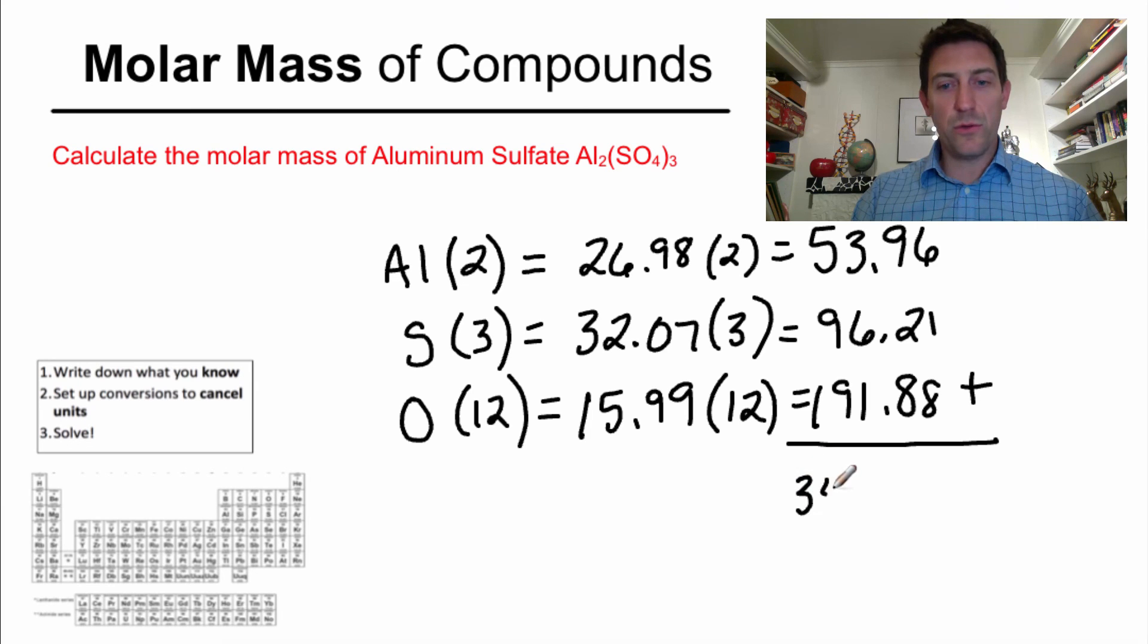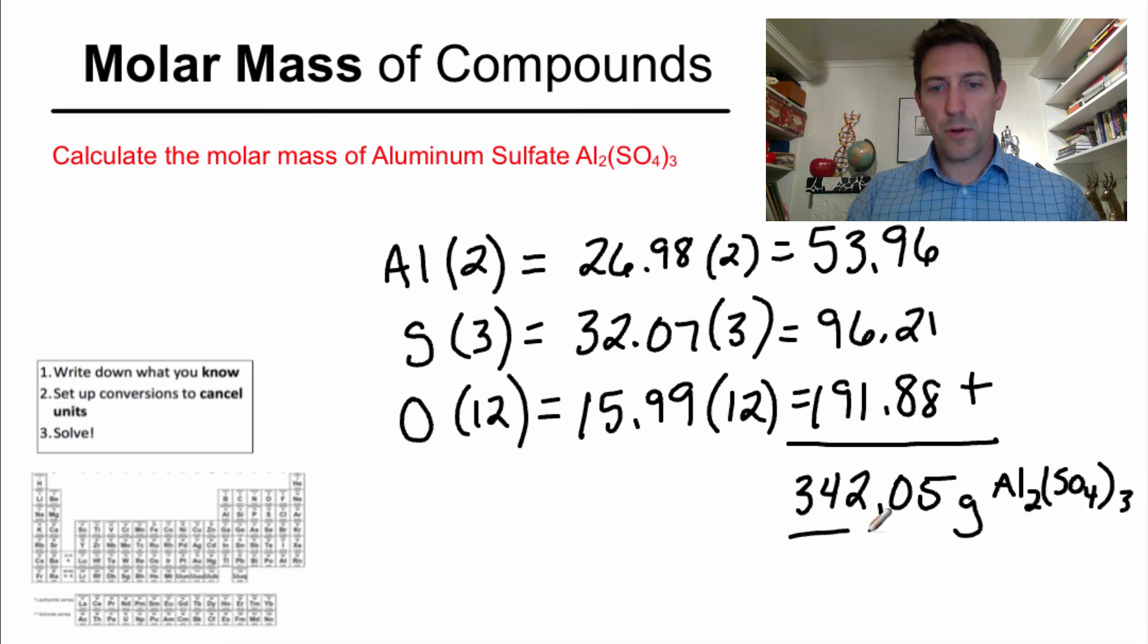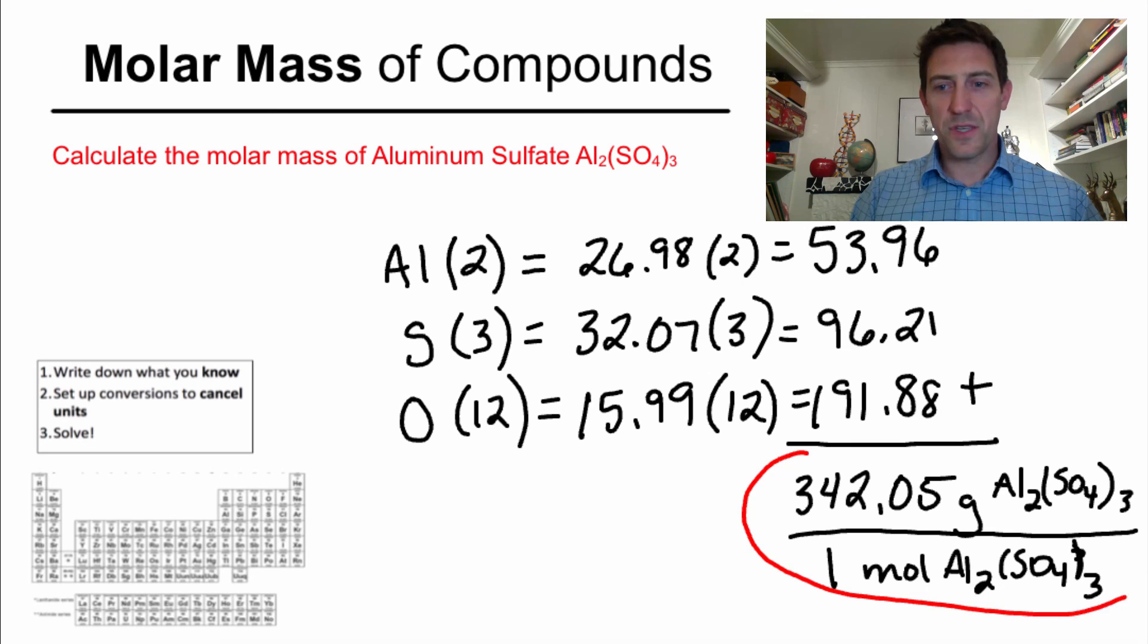When I do that, I get 342.05, and this is the molar mass, the mass of one mole. So this is grams of aluminum sulfate per one mole of aluminum sulfate. It's as easy as that.